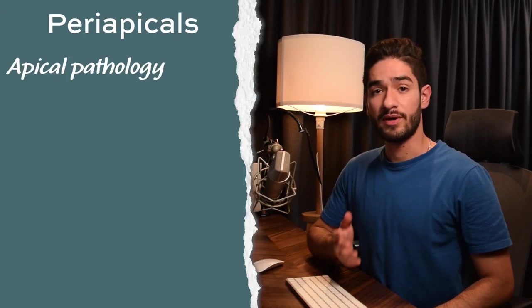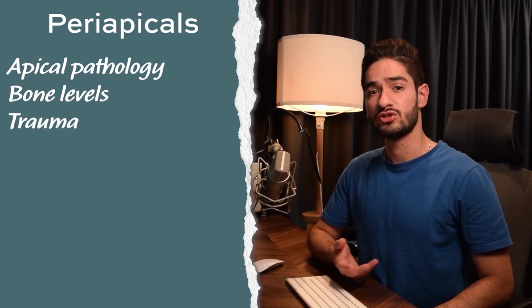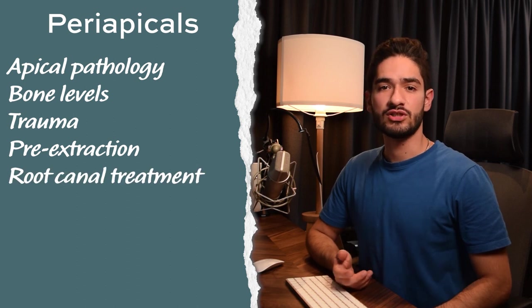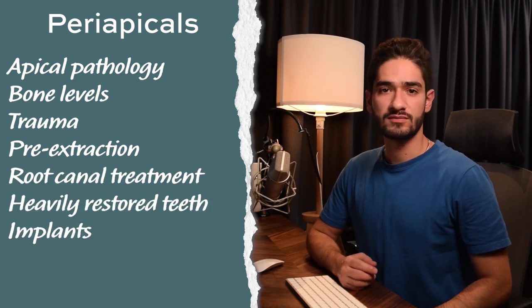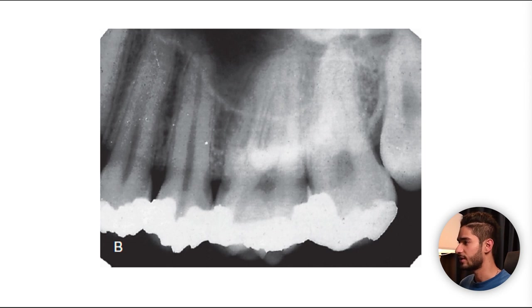Now let's move on to periapicals. There are many reasons to take a PA — the main ones are detecting apical pathologies, assessing bone levels for perio, after trauma like a fractured tooth, assessing root morphology before an extraction, for root canal treatment, and evaluation of heavily restored teeth or implants. The main difference between a bite wing and a PA is that in the PA, as the name suggests, you get a good view of the periapical tissues.